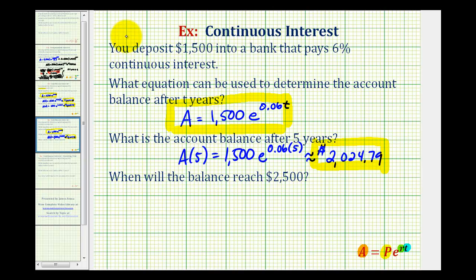We need to solve the equation 2,500 equals 1,500 times e raised to the power of 0.06t. So we want to solve this equation for t. So we want to isolate the exponential part, so we'll divide both sides by 1,500.